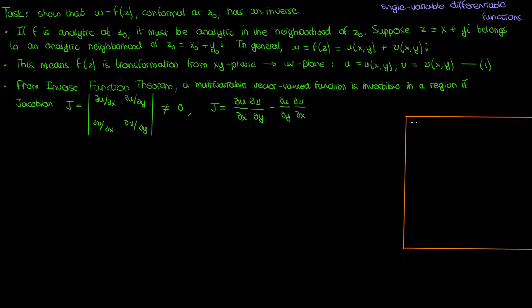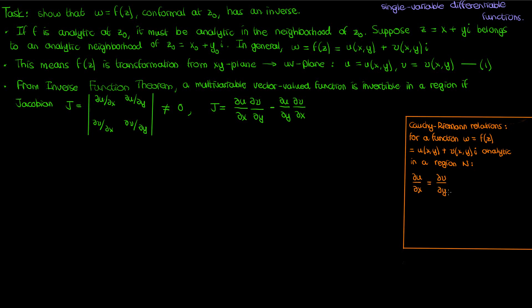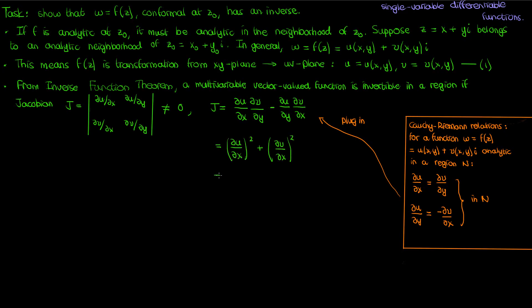Recall the Cauchy-Riemann relations from complex analysis. These relations, which are valid when a function is analytic in a region, state that the partial of u with respect to x equals the partial of v with respect to y, and the partial of u with respect to y equals the negative partial of v with respect to x. If we plug these into the expression for our determinant, the determinant becomes the sum of squares of the partial of u with respect to x and the partial of v with respect to x. This sum of squares is equal to the modulus squared of the derivative of f with respect to z.